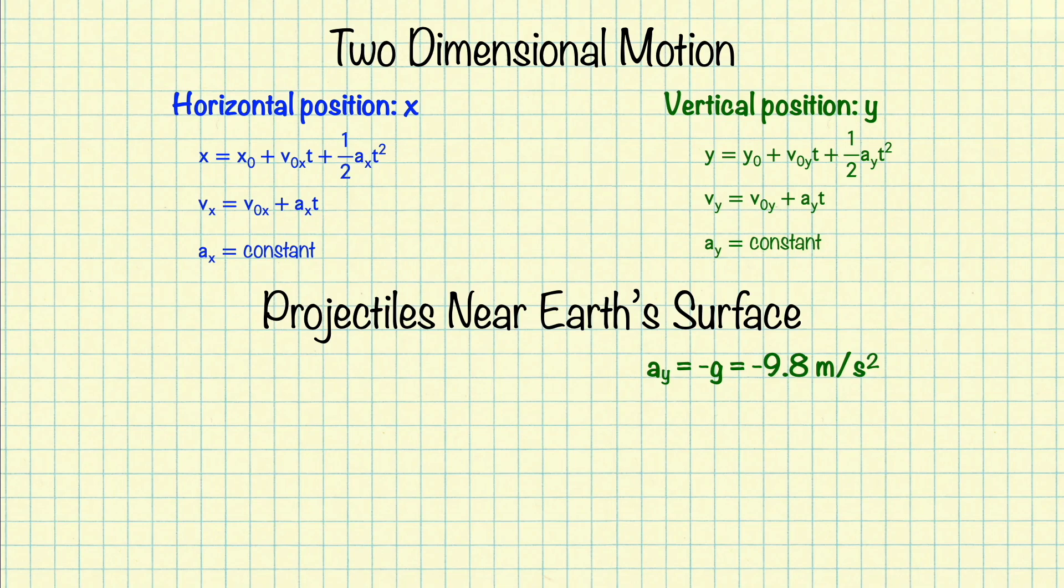If you pick down to be the positive direction, then the acceleration will be positive 9.8 meters per second squared. Notice this acceleration is the same for all objects. It does not depend on the object mass. All objects fall at the same rate regardless of their mass, assuming no air resistance.